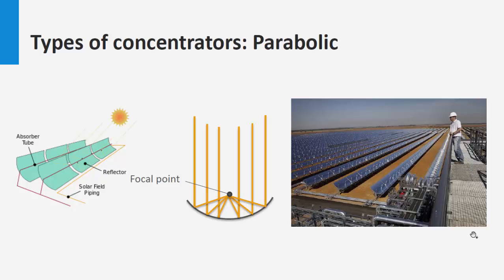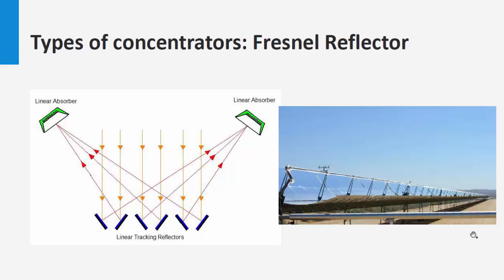Fresnel reflectors are similar but use thin flat mirrors instead, in order to concentrate sunlight onto tubes in which the fluid is pumped. Flat mirrors allow more reflective surface in the same amount of space, while parabolic mirrors reflect more sunlight and are much cheaper.